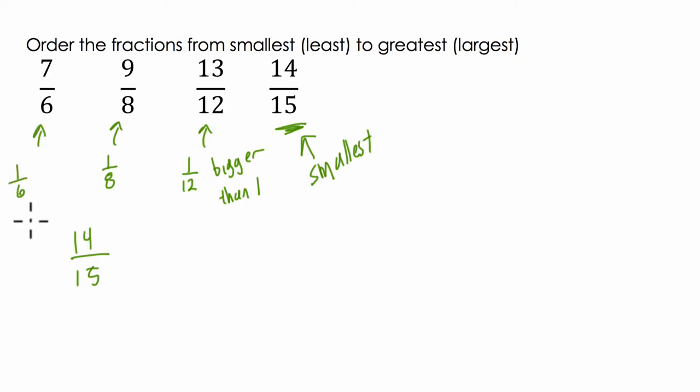So, now I can see something here. I know a 12th is smaller than an 8th, and an 8th is smaller than a 6th. So this is a tiny bit bigger than one, it's a 12th bigger than one. So I know it's the next number. It's bigger than 14/15.